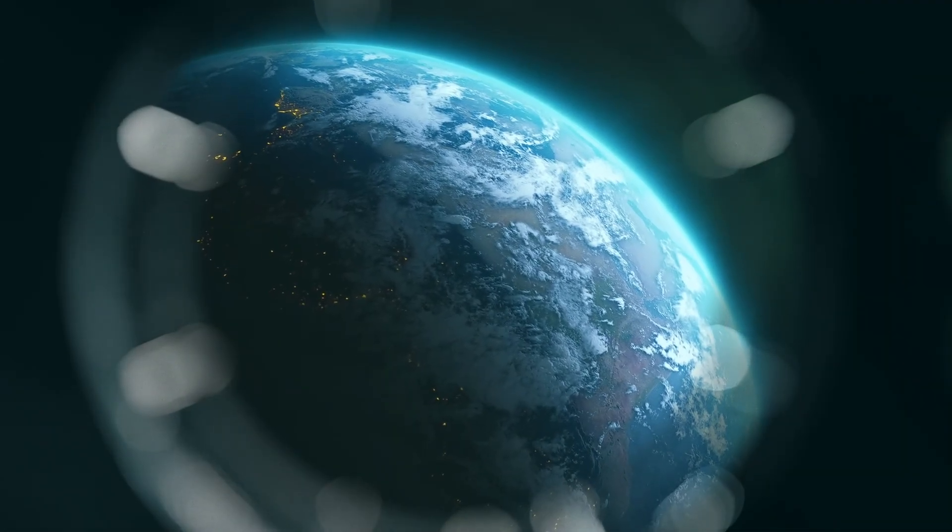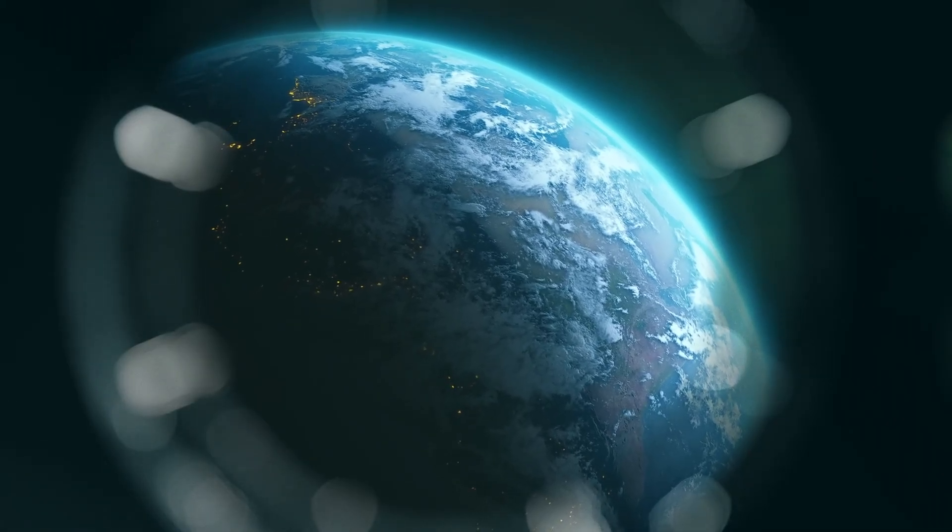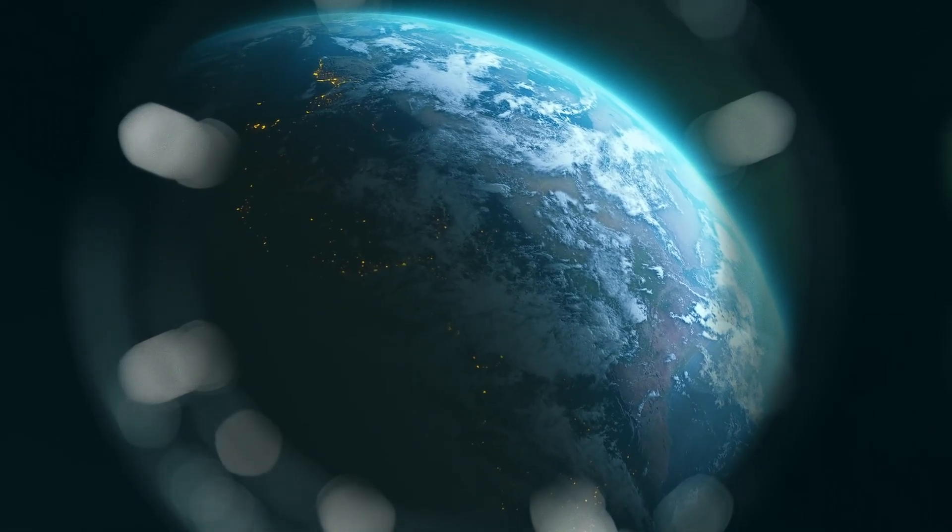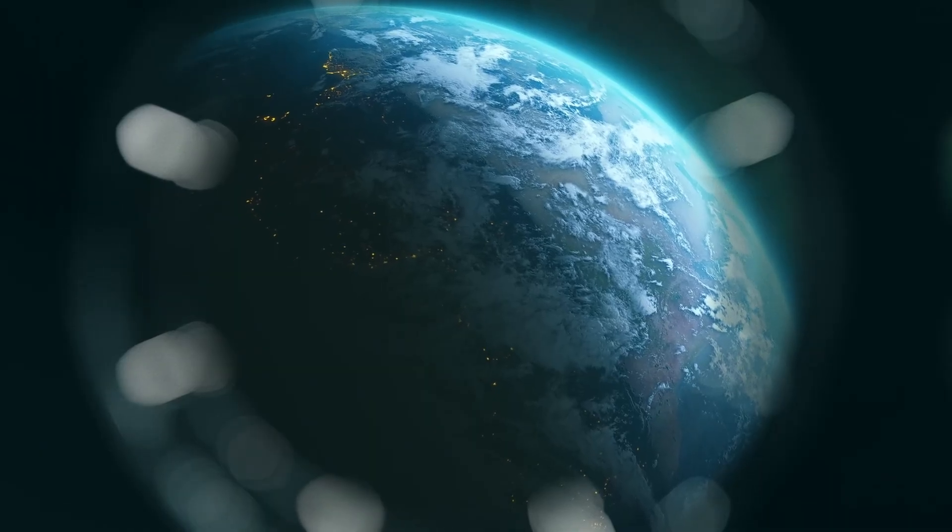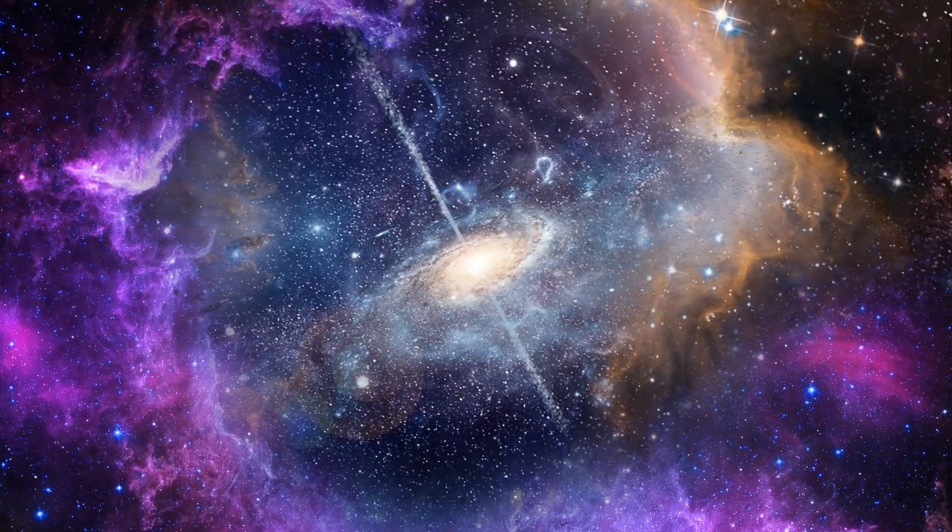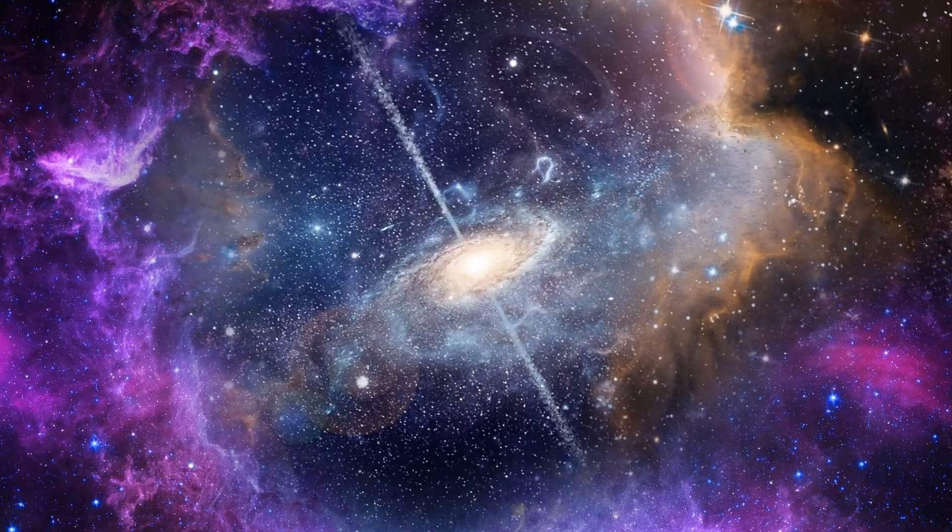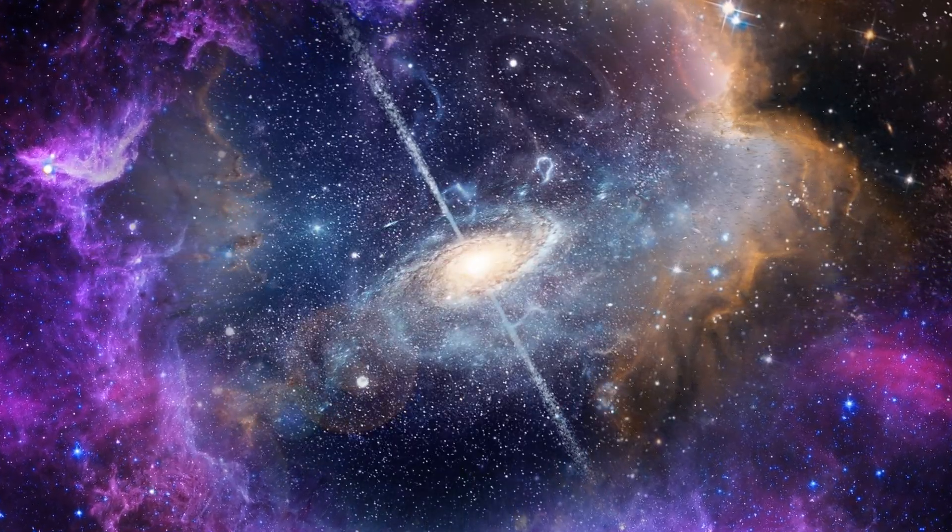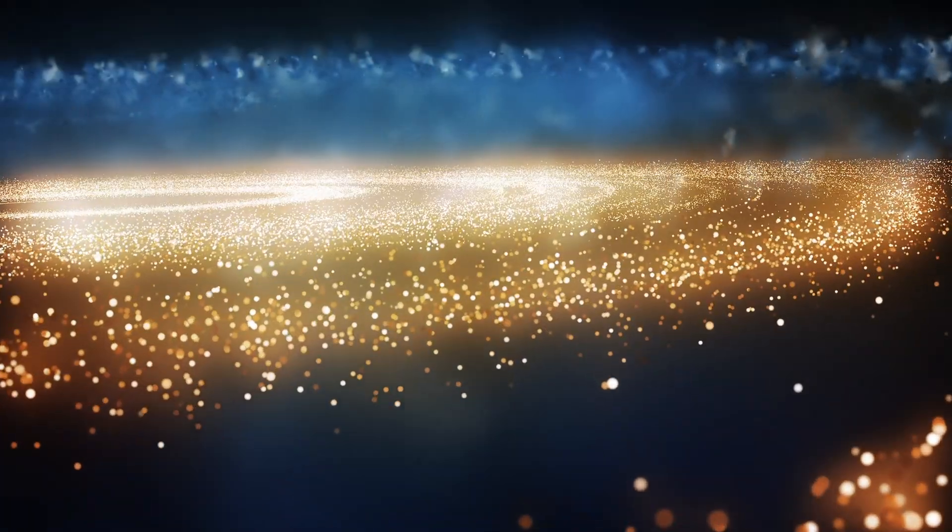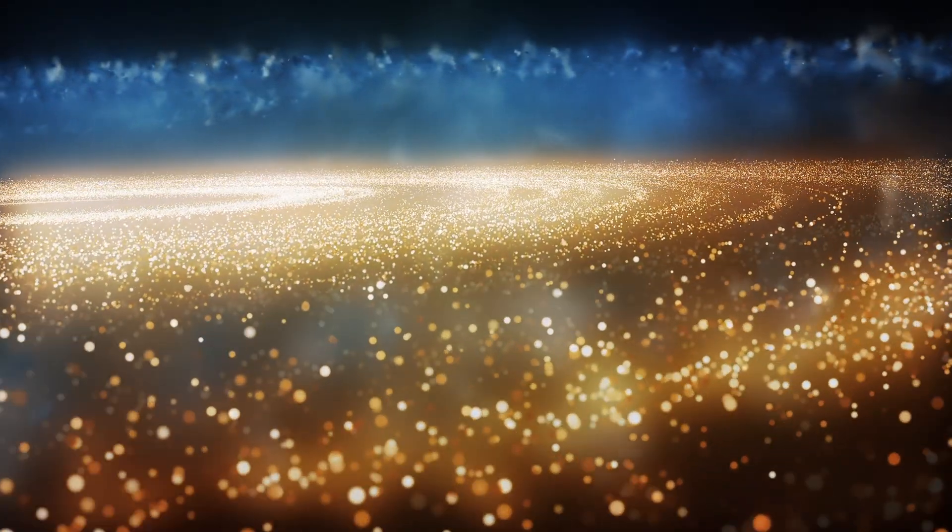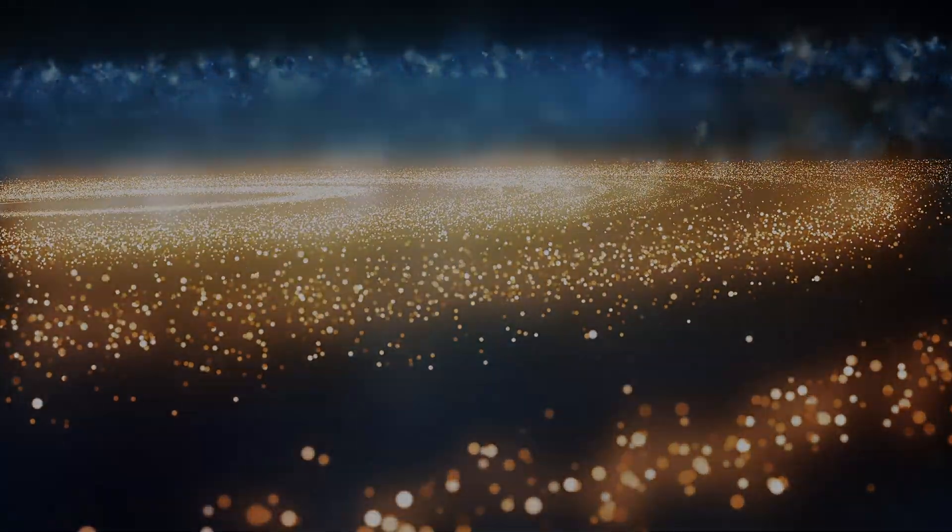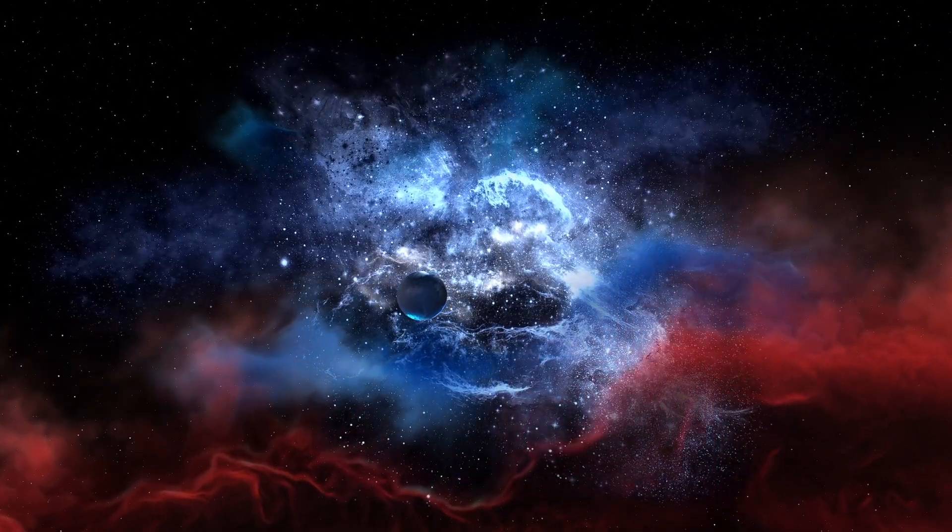If galaxies are the bright punctuation marks of the universe, what lies between them is the unseen grammar that holds everything together. The universe, we now know, is not a random scattering of galaxies. It is structured, woven into a vast cosmic web of filaments and voids, stretching across billions of light-years. At the intersections of these filaments, galaxy clusters form. Titanic congregations containing thousands of galaxies bound together by gravity. Between them are immense voids, regions of almost total emptiness where few galaxies dwell.